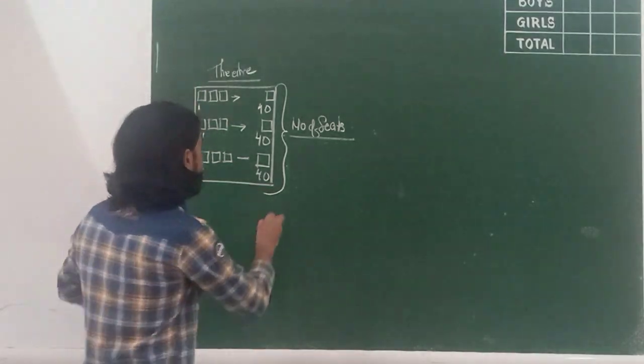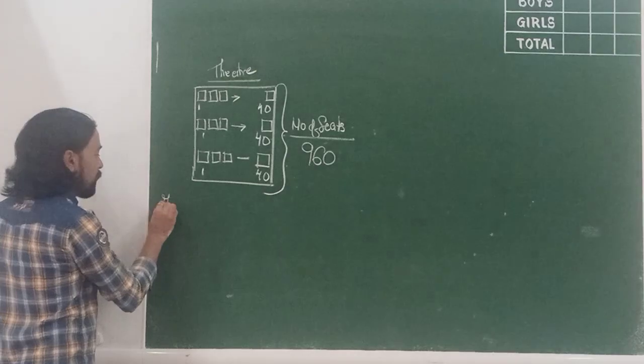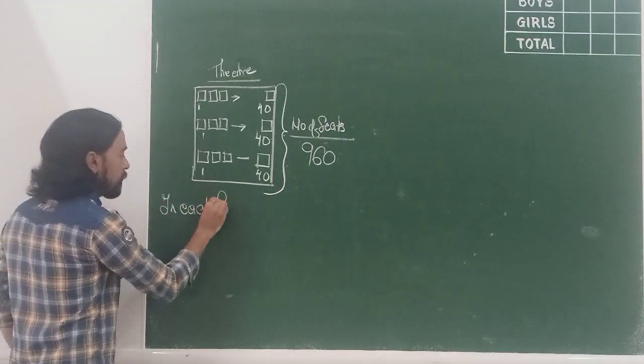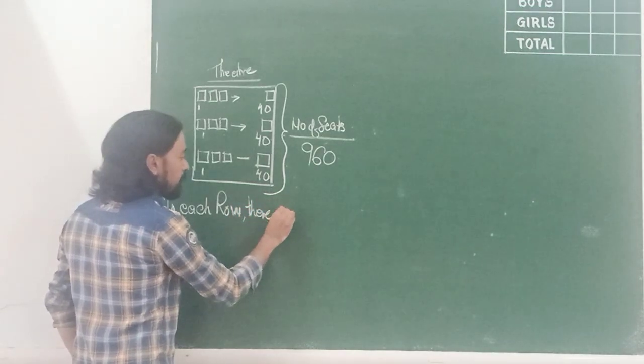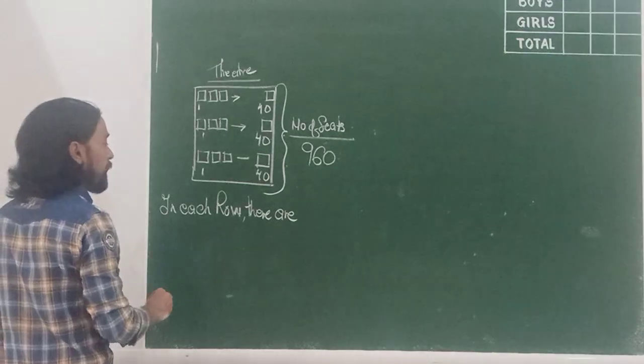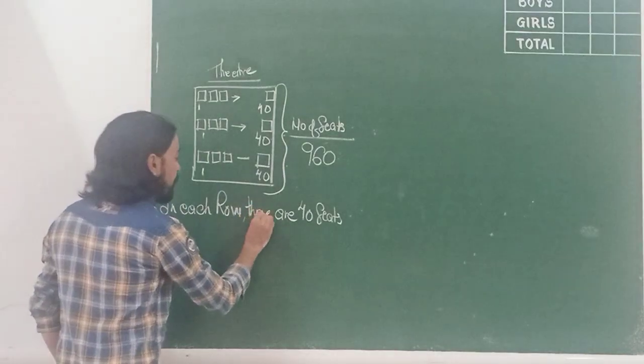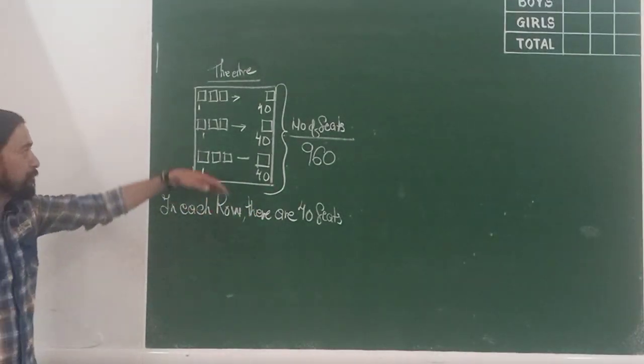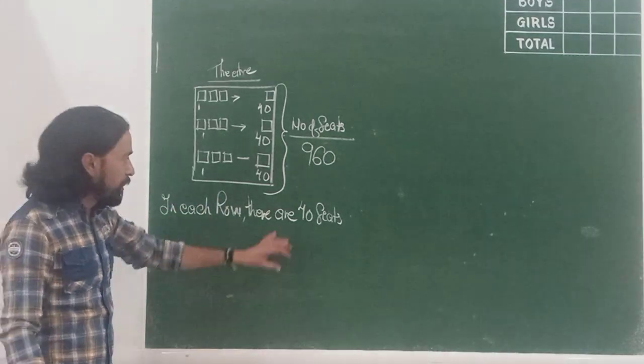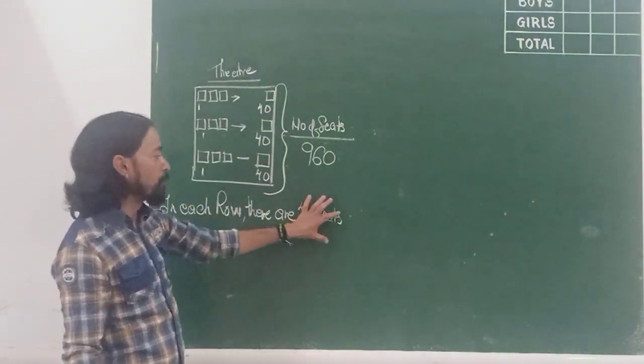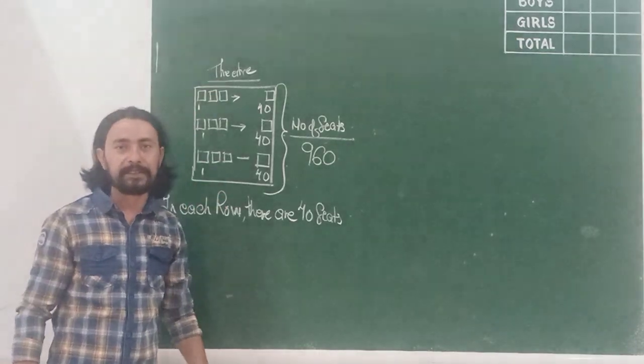Now the total capacity of this theater is 960. And in each row, in each row there are 40 seats. I have to find out how many rows are there. What would I do? I will divide. I will divide the total capacity by the number of seats in each row and I will come to know how many rows are there in the theater.